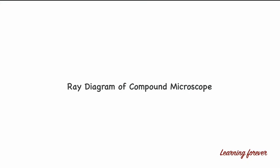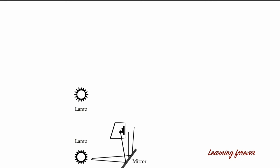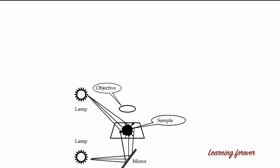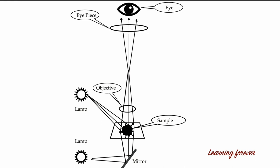Let's see the ray diagram of the compound microscope. The light source — natural or artificial — emits rays that fall on the mirror, which directs light through the condenser onto the specimen. These light rays are then united by the objective lens and sent towards the eyepiece lens close to the eye. Along this path, the rays intersect to form a real image of the object. The distance between the real image and the objective is called S.